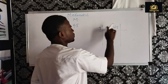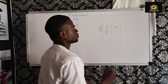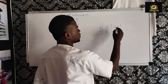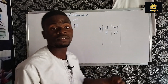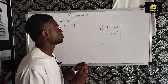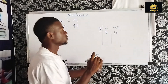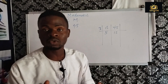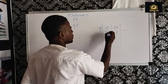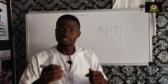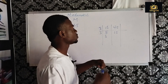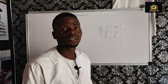3 into 45 gives us 15. Now let's check again — can 3 go into 5? No, it gives a remainder. Can 3 go into 15? Yes, 3 into 15 gives us 5. So write 3 again; 3 into 5 just write 5, and 3 into 15 gives us 5.